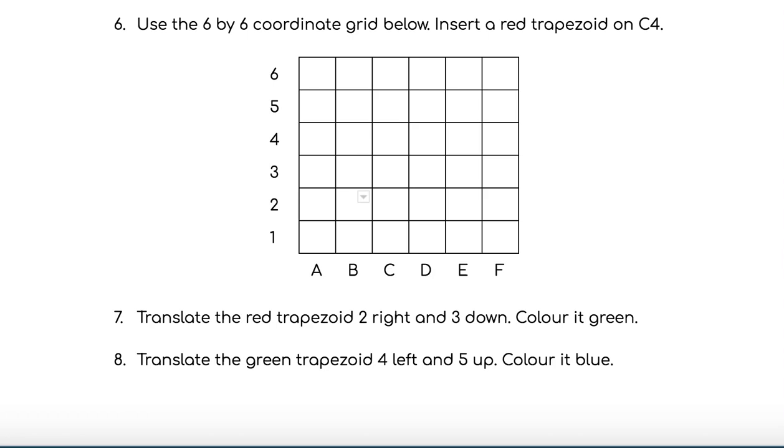For question 7, translate that same red trapezoid 2 spaces to the right and 3 spaces down and then color it green. For question 8, translate the green trapezoid, the one you've just drawn for question 7, 4 to the left and 5 up and change that one to blue.